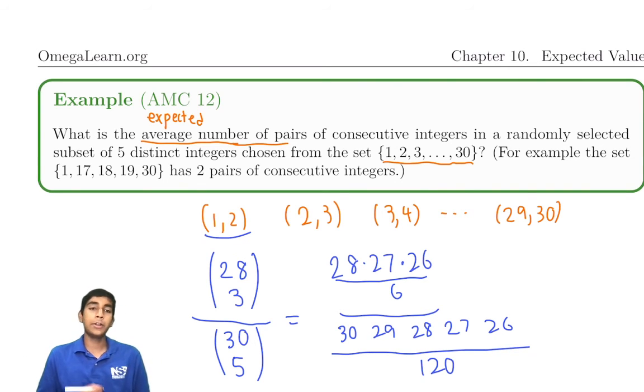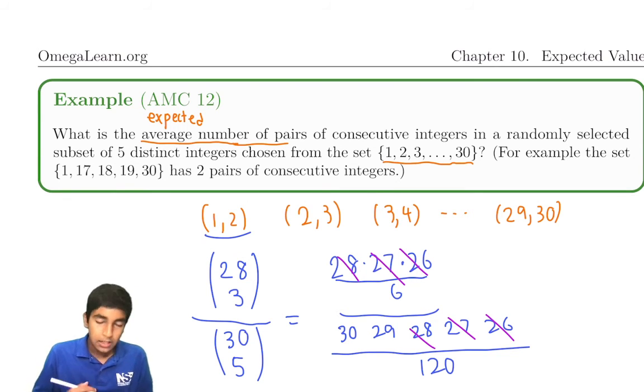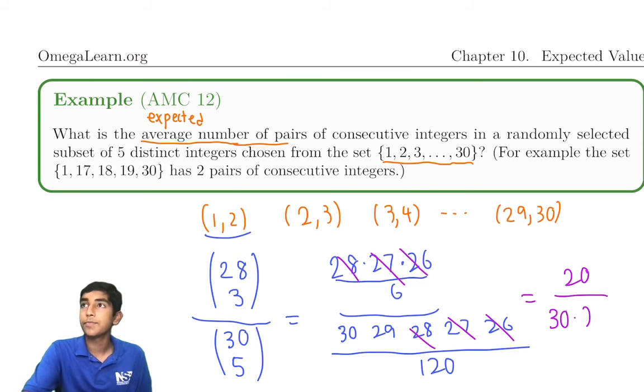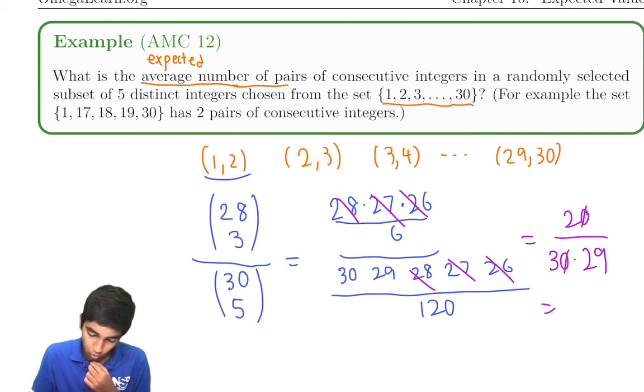This is why we don't multiply that. So we can just cancel. Let's just cancel a bunch of terms. 28, 27, 26. That seems to be about it. Let's multiply by 120 to the numerator and denominator. This gives us 20 over 30 times 29. Let's simplify it indeed. We're left with 2 over 87.